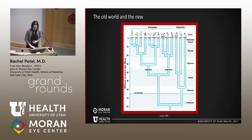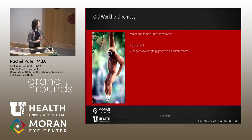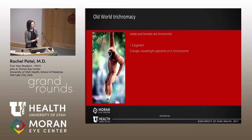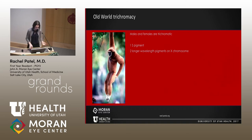In terms of old-world trichromats, including humans, males and females are both generally trichromatic. They have one S-pigment gene on a non-sex chromosome, and then two different longer-wavelength proteins — usually M and L pigments — on the X chromosome, making them trichromatic.